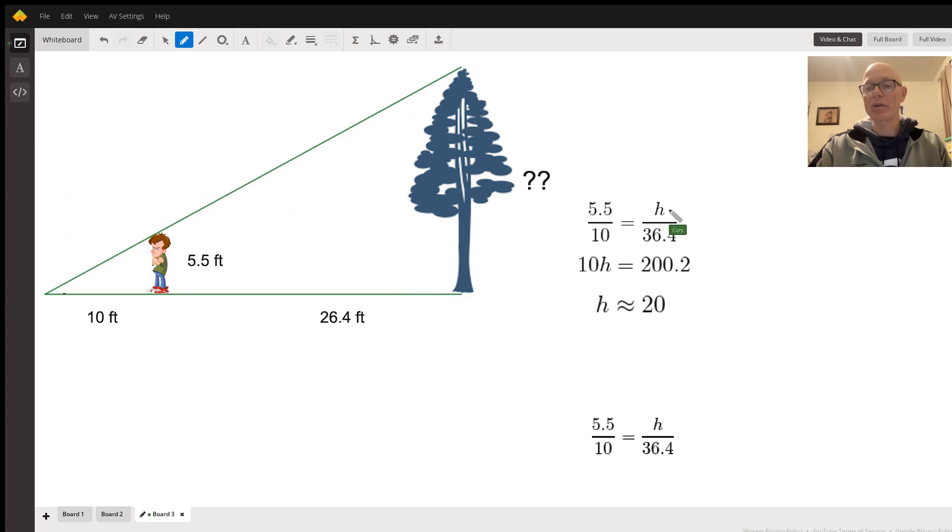The second one is our unknown height of H. That's the tree. We don't know the height of that yet. And the shadow length of the tree, which is 10 feet plus 26.4 feet to make 36.4 feet.